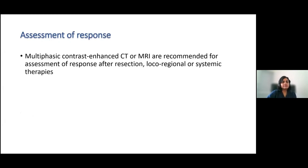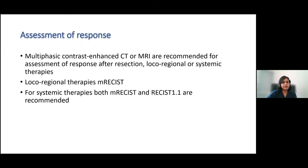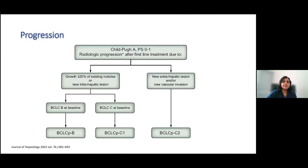Assessment of response should be done with CT or MRI imaging, using the mRECIST and RECIST 1.1 calculators to assess response. Regarding progression after treatment, whether the patient was in BCLC B or BCLC C, progression may be the presence of a new lesion or an increase in size of an existing lesion, and may be untreatable or require stage migration.